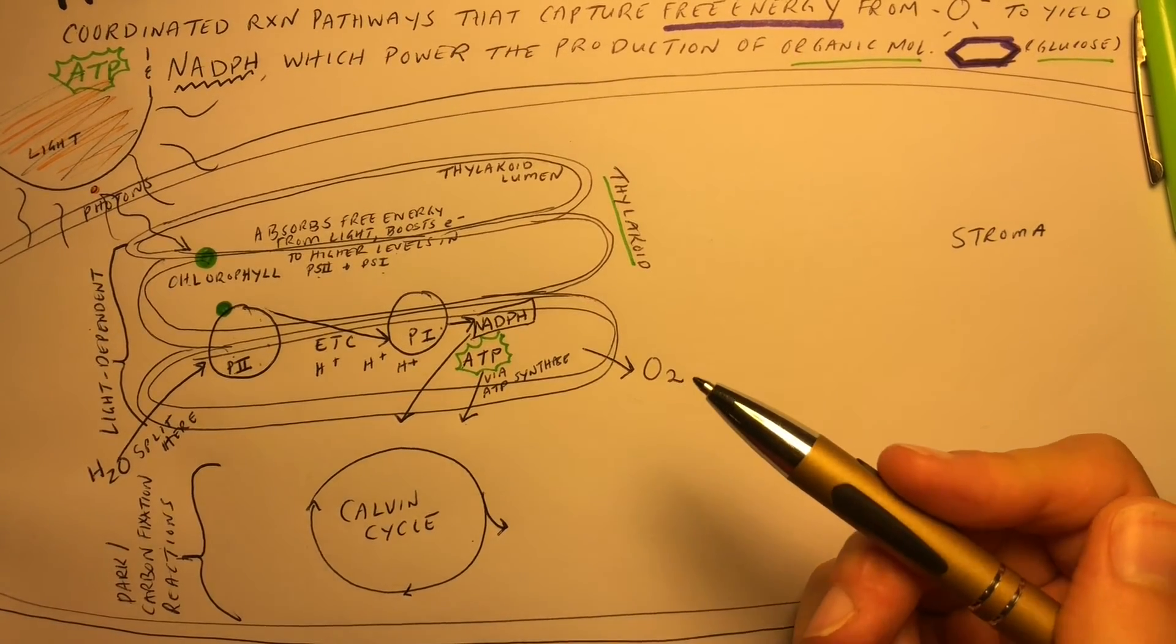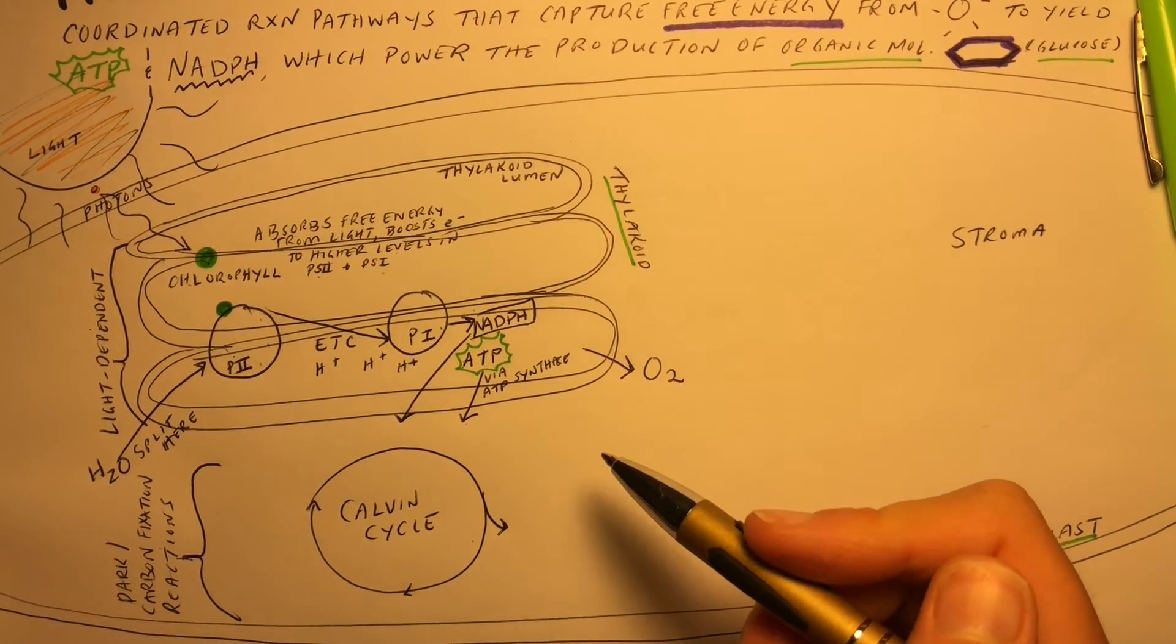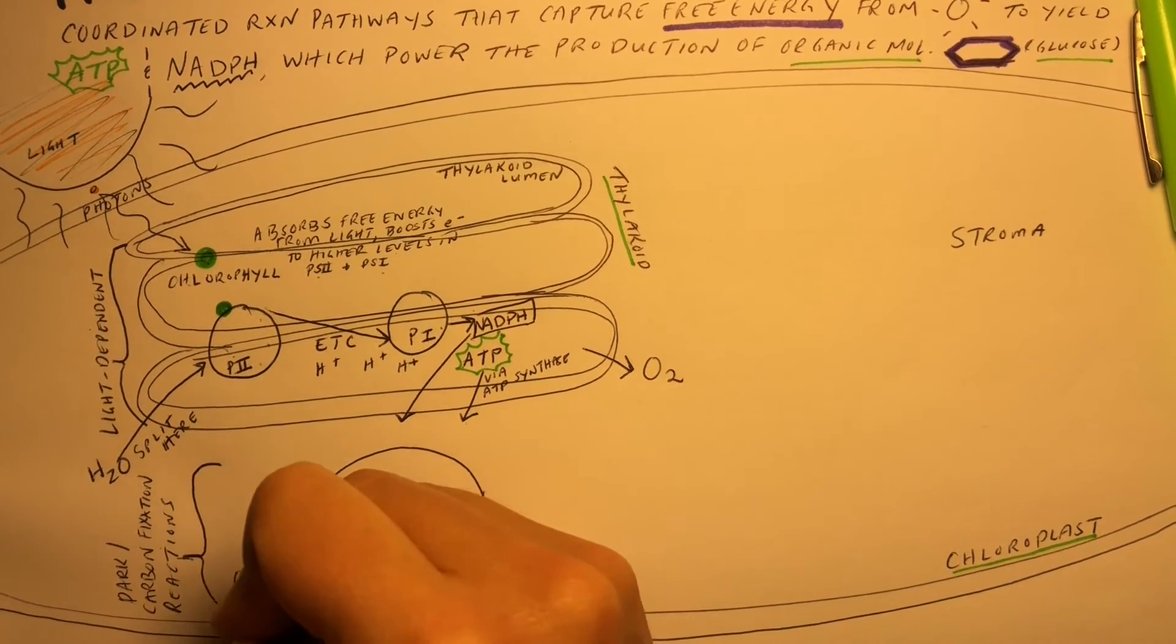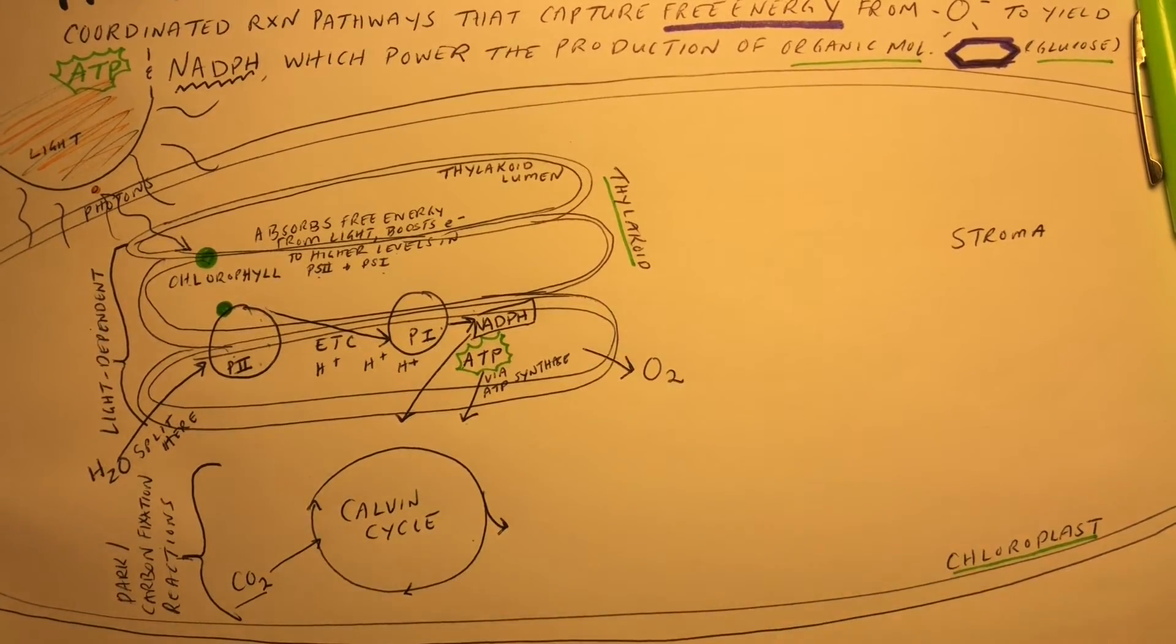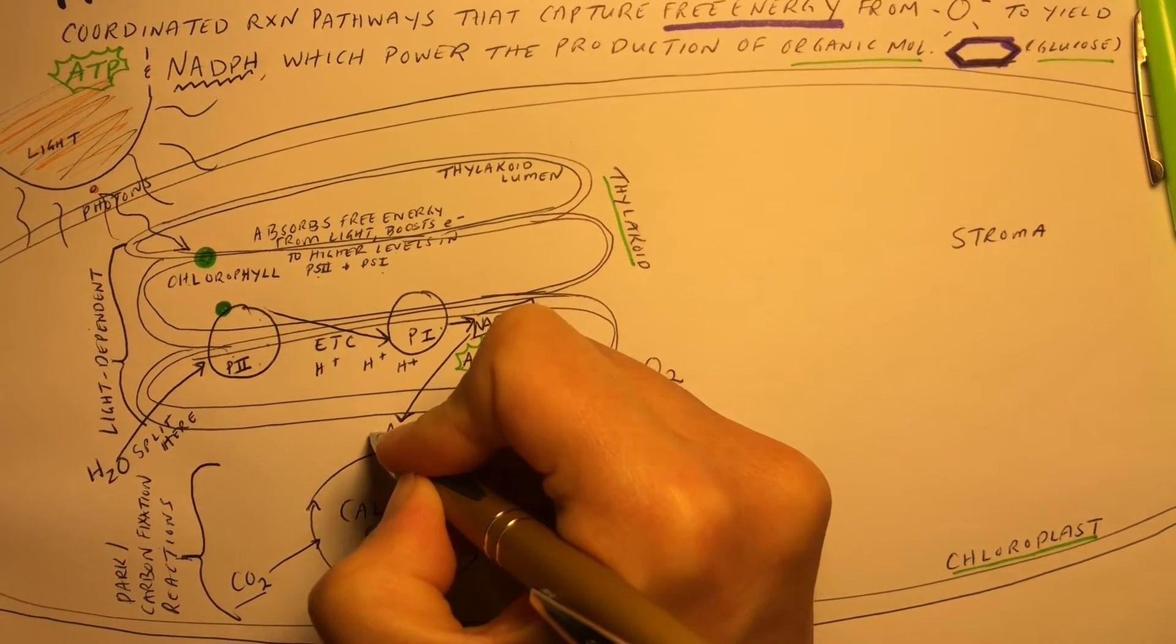You don't need to know the names of all of these steps or all of these enzymes for AP biology. It is important to know that here is where carbon dioxide comes into play. Carbon dioxide goes into the Calvin cycle along with ATP and NADPH.